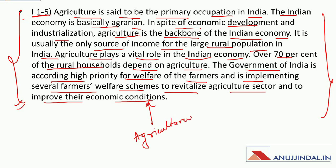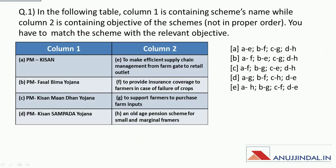Question number one: In the following table, column one contains scheme names while column two contains objectives of the schemes, which are not in proper order. You have to match the scheme with the relevant objective.